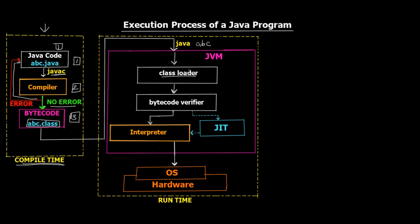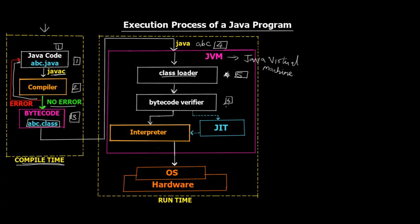The Class Loader is a program inside the JVM — the pink box in the diagram represents the JVM, which stands for Java Virtual Machine. The Class Loader loads abc.class into the JVM — that's step five. Then there is the Bytecode Verifier, another program that checks the bytecode for any errors or bugs inside it — that's step six. All of this happens inside the JVM.